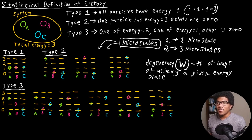So now if we go to type three, what we notice is that there's six different ways that we can distribute the particles with a type three distribution, where one of the particles has energy two, one of them has energy one, and the other has energy zero. There's six different ways of doing that. So type three is going to have six microstates.